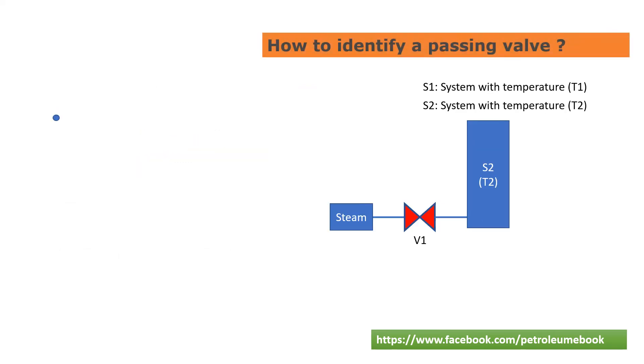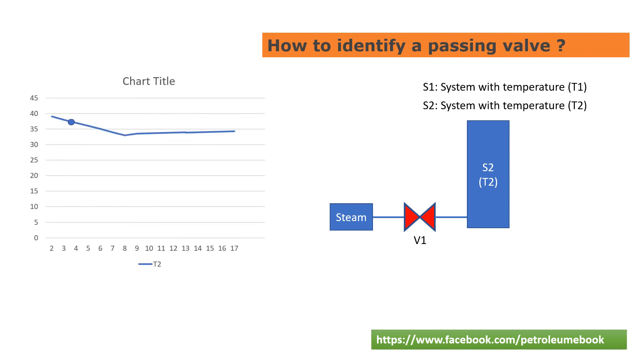The second example with the upstream system is steam. With the steam system, the pressure and temperature almost keep stable. We can confirm valve V1 passing by the temperature of downstream system T2. After fully closing V1, the temperature will firstly reduce, but after stopping steam a long time, if temperature T2 increases again day by day, we can conclude that valve V1 is passing.